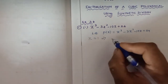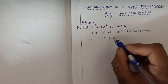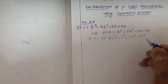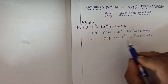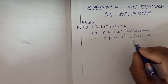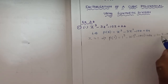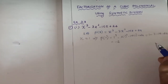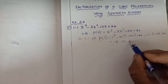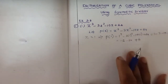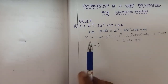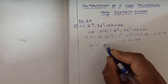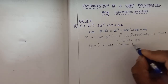If x minus 1 is a factor of the polynomial, then x equals 1. So we calculate p(1): p(1) = 1 cube minus 3 into 1 square minus 10 into 1 plus 24. This is not equal to 0, so x minus 1 is not a linear factor of p(x).